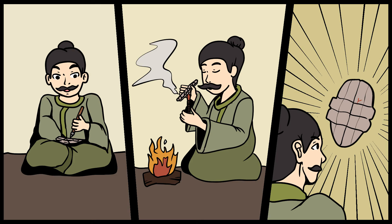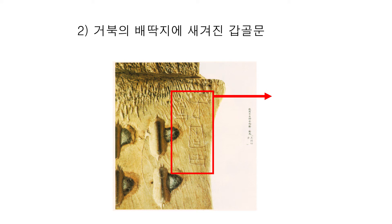점친 내용과 점친 결과를 뼈의 가장자리나 뒤쪽에 새겨놨어요. 그것을 갑골문이라고 합니다. 그래서 우리가 선거할 때 쓰는 도장 모양이 바로 이 복자, 갈라지는 그 모양에서 나온 거예요.